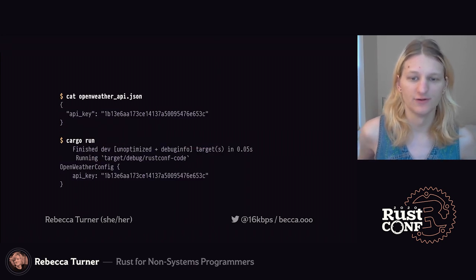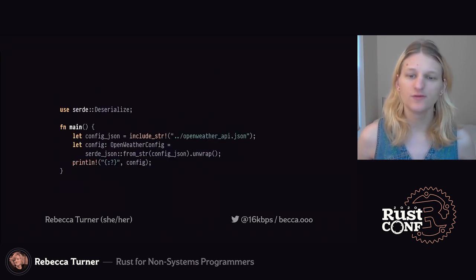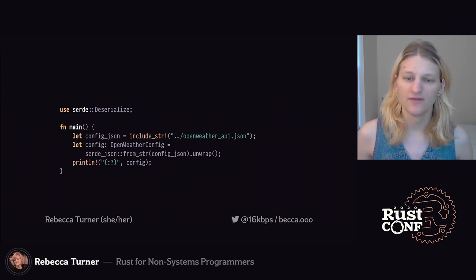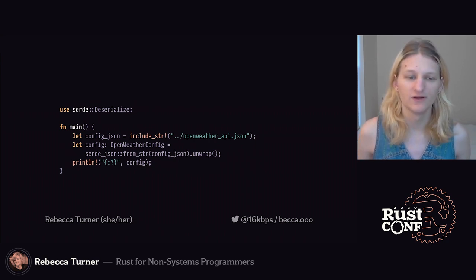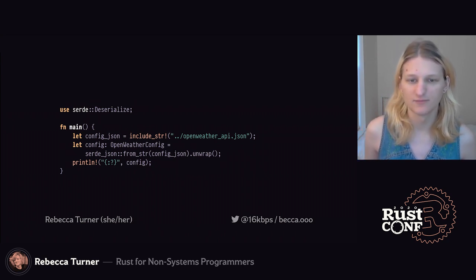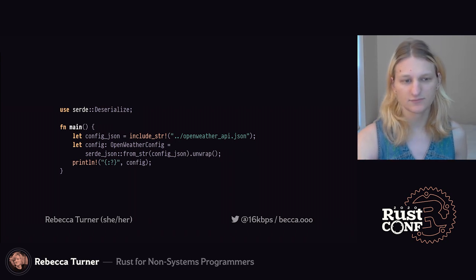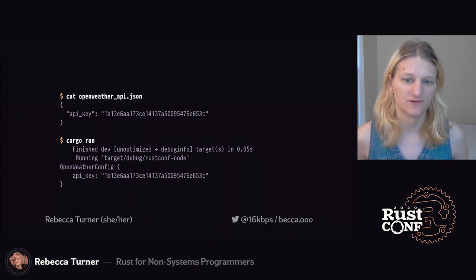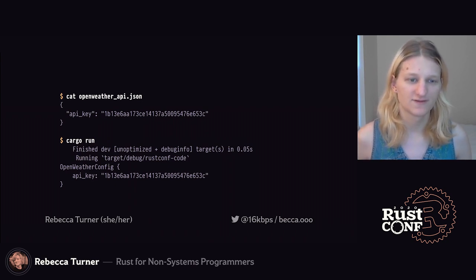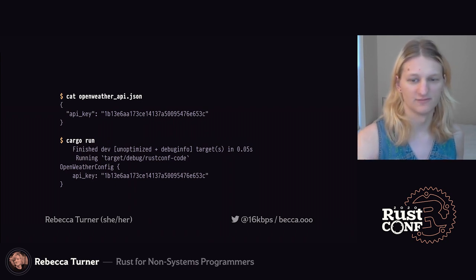Here's what deserializing to a value looks like. Note that we don't need to explicitly construct our OpenWeatherConfig object — that, along with parsing the JSON, matching up keys to fields, and recursively constructing other deserializable values, is handled by serde and serde_json. When we run this, we get some nice pretty-printed debug output by default. That's not my actual API key, by the way.